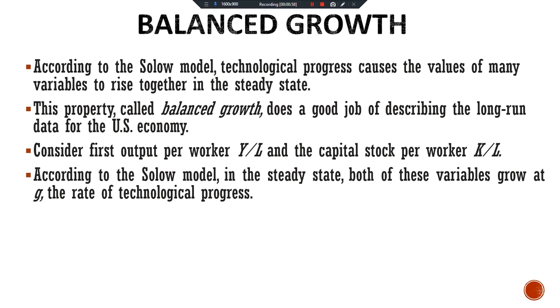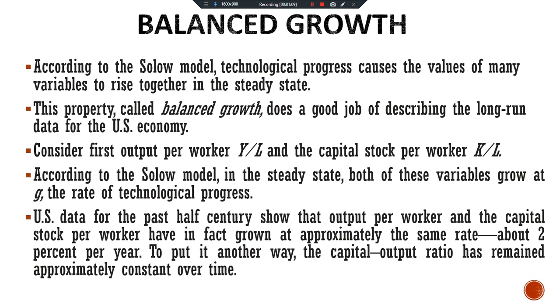According to the Solow model, in the steady state, both of these variables grow at G, the rate of technological progress. US data for the past half century show that output per worker and capital stock per worker have in fact grown at approximately the same rate — about 2% per year. In other words, the capital-output ratio has remained approximately constant over time.